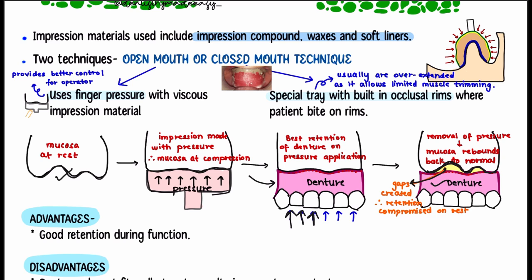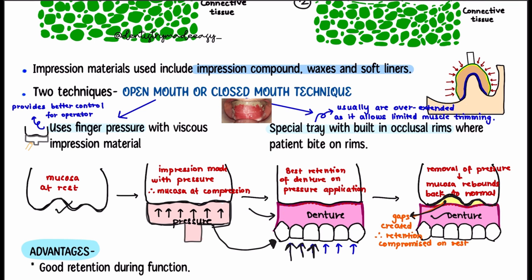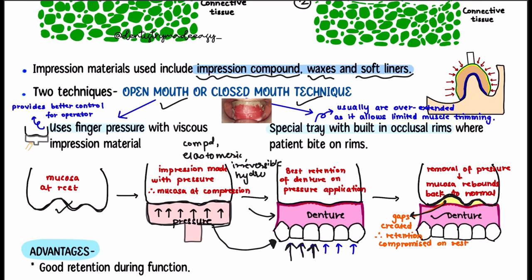Such impressions do not fit well at rest. The impression materials that can be used include impression compounds, waxes, or soft liners. There are two techniques for mucocompressive impression making: open mouth technique and closed mouth technique. In the open mouth technique, the patient's mouth is open and finger pressure is applied. Materials used include impression compound, elastomeric materials, or irreversible hydrocolloid. The open mouth technique gives the best control as pressure is applied externally onto the tray.